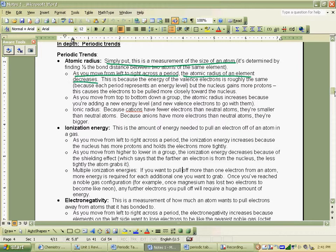This is because the energy of the valence electron is roughly the same, because each period represents an energy level, but the nucleus gains more protons. This causes the electrons to be pulled more closely towards the nucleus. As you move from top to bottom, down a group, the atomic radius increases because you're adding new energy levels. So there's answers to that.